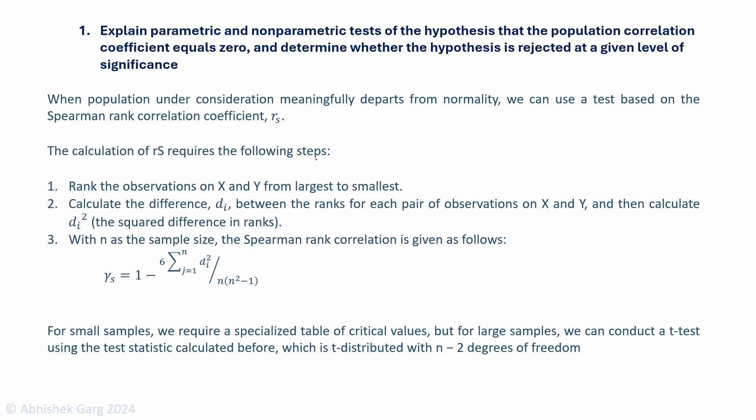When population under consideration meaningfully departs from normality, we can use a test based on the Spearman rank correlation coefficient. The calculation of rs requires these steps. First, rank the observations on X and Y from largest to smallest because we have two samples X and Y. We are checking the correlation between these two samples. Then calculate the difference between the ranks for each pair of observations, and then calculate di², the squared difference in ranks.